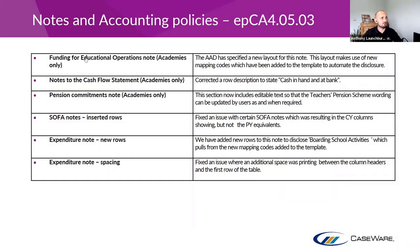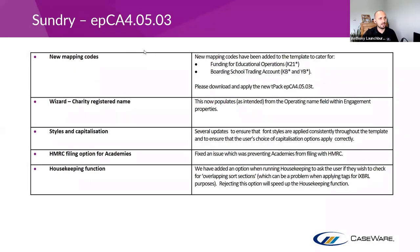Moving to reports, accounts notes and accounting policies — we have updates to the funding and education operations notes. These aren't new notes, but they do have updated layouts. The easiest way to show this is with a side-by-side example. New mapping codes are involved: K21 codes, and boarding school specific codes — KB codes for income and YB codes for expenditure.